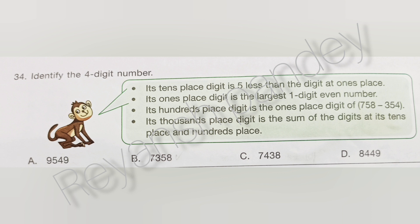Identify a 4-digit number. Its 10s place digit is 5 less than the digit at the ones place. Its ones place digit is the largest 1-digit odd number. Its 100s place digit is the ones place digit of 758 minus 354. Its 1000s place digit is the sum of the 10s and 100s place digits. The answer is C — 7,438.